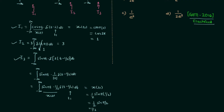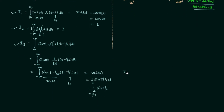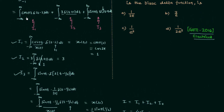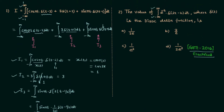The total integration I equals I1 + I2 + I3. I1 = 1, I2 = 3, and I3 = 1/2, so we have 4.5 as our answer. In this way you can solve questions involving integration where a signal is multiplied by an impulse, or where we have integration of a pure impulse signal.